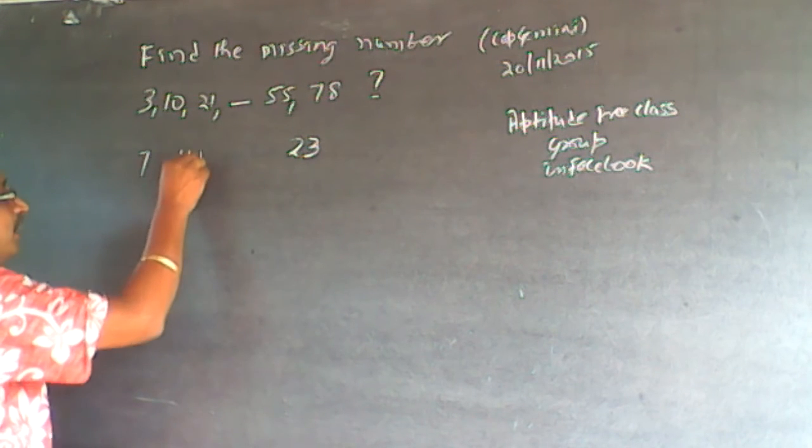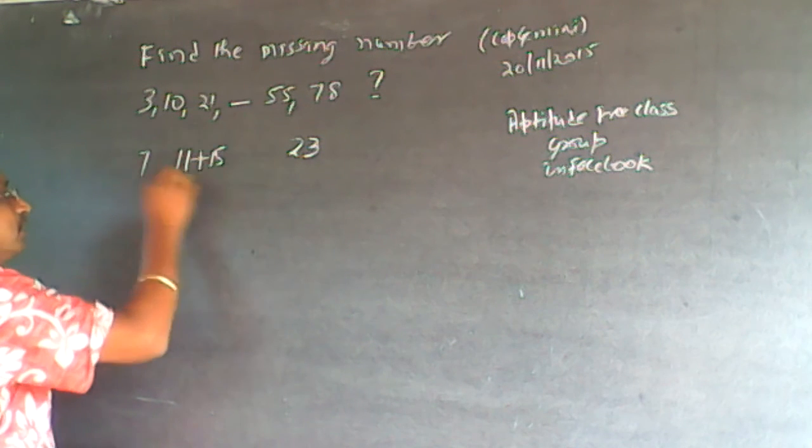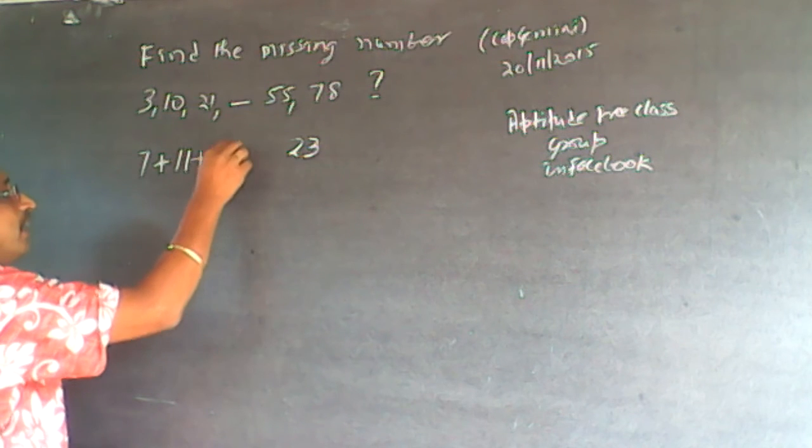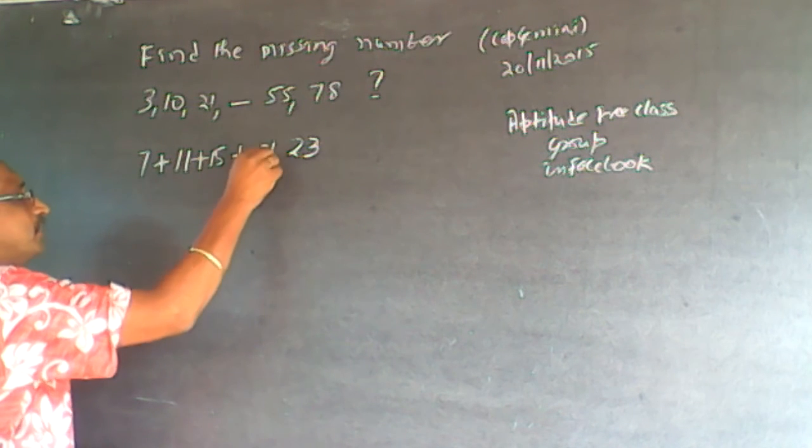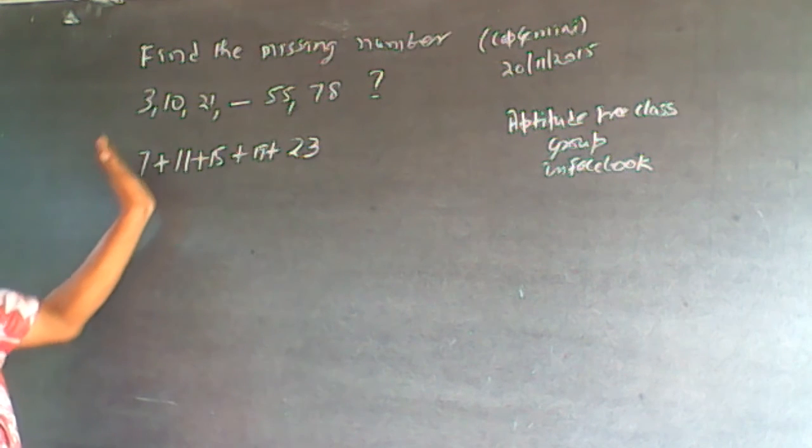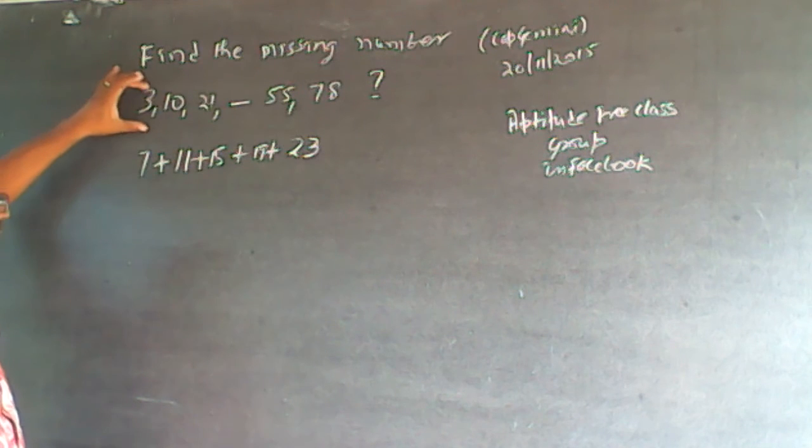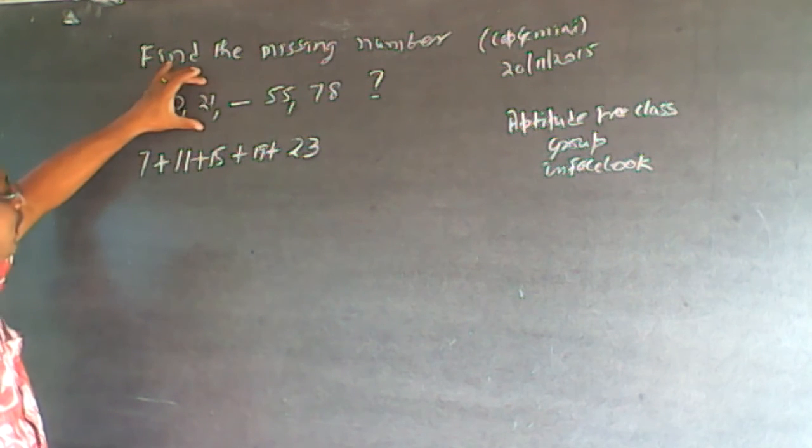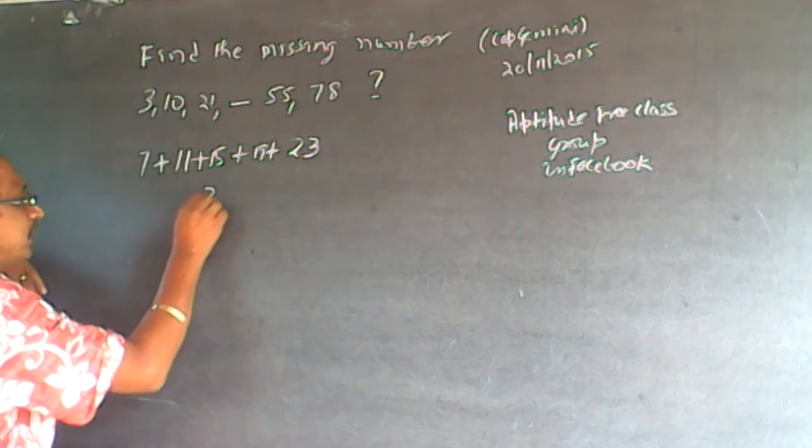So plus 15. Here it is plus 11. Plus 15 could be plus 19, plus 23. You will have to find out whether this pattern is matching. So first I am adding 7, then I am adding 11.